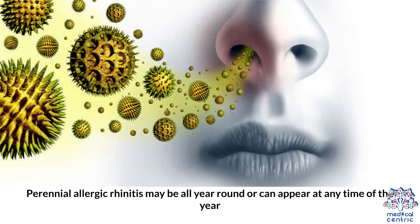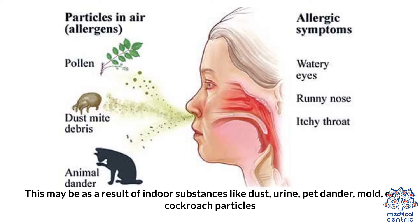Perennial allergic rhinitis may be all year round or can appear at any time of the year. This may be a result of indoor substances like dust, urine, pet dander, mold, or cockroach particles.